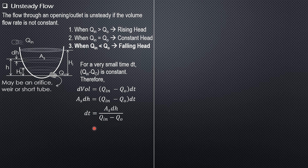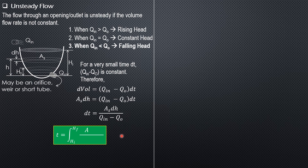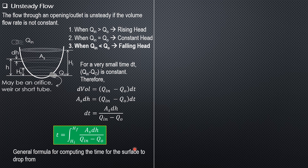From this relationship we can derive a formula for the time for the surface to drop from H_i to H_f. The time is therefore the integral of area S dH over (Q_in minus Q_out), with limits from the initial head H_i to the final head H_f. That is the general formula for computing the time for the surface to drop.